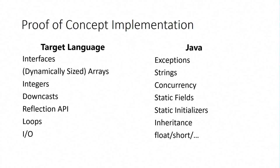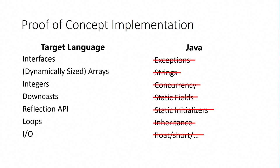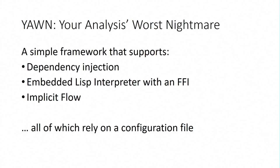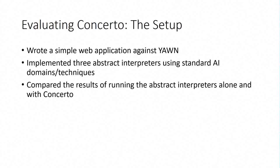So in my remaining minute, a little bit on implementation. We cooked up our own little toy language. It has a lot of the hard parts of doing this for a real language. The next six months, once John returns to research land, we'll be handling the rest of Java. We don't handle it yet. That's future work. But this is a lot of the hard stuff. So it's my job to come up with the acronyms. We built a little framework called Your Analysis Worst Nightmare that supports dependency injection and embedded Lisp interpreter that can do arbitrary foreign function calls back into our little subset of Java. All sorts of crazy stuff, all done by configuration files.